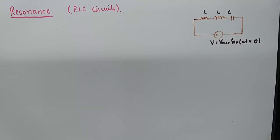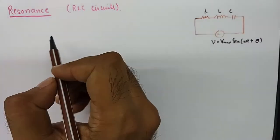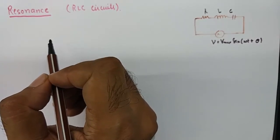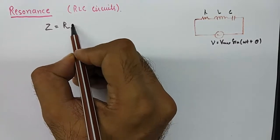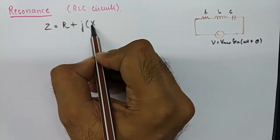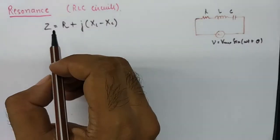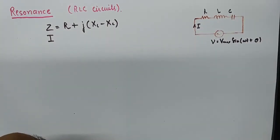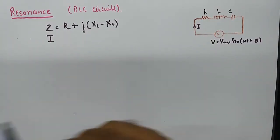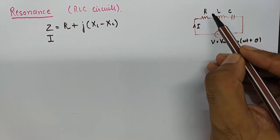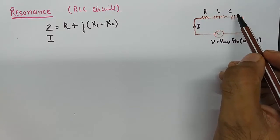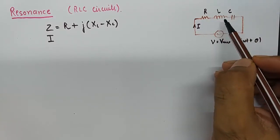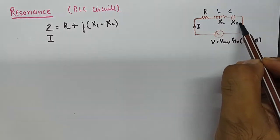If you have been following my previous tutorials on RLC circuits with AC and DC excitation, you know that in AC circuits with an impedance R plus j(XL minus XC), the current in the circuit will either lead or lag the voltage. In this circuit we have a resistive component R and inductive and capacitive components L and C respectively, which produce XL and XC reactances.